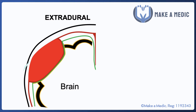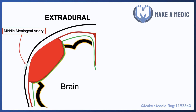An extradural, as the name suggests, is when a bleed occurs between the dura and the surface of the skull. It classically occurs in the context of head trauma that has caused a bleed from the middle meningeal artery.